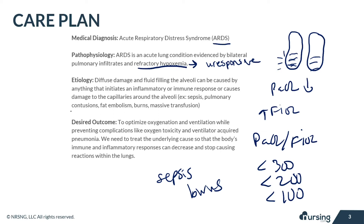Our desired outcome is to optimize oxygenation and ventilation while preventing complications like oxygen toxicity and ventilator-acquired pneumonia. We also need to treat the underlying cause so that the body's immune and inflammatory responses can decrease and stop causing these reactions in the lungs.